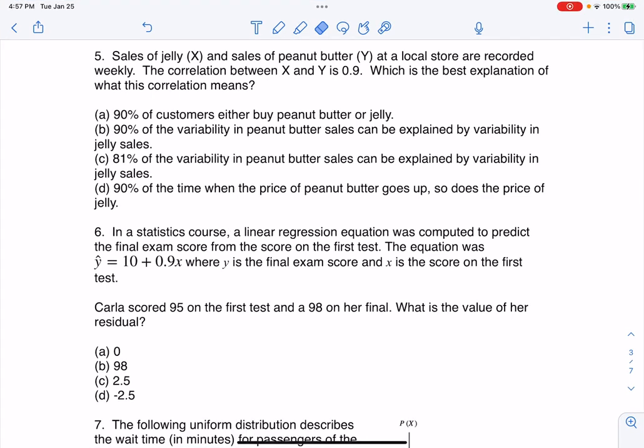Hey everyone, let's take a look at multiple choice number five. So we got sales of jelly and sales of peanut butter at a local store are recorded weekly. The correlation between x and y is 0.9. Which is the best explanation of what this correlation means?